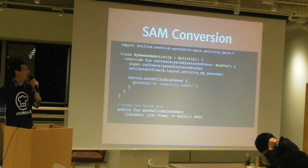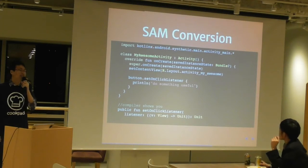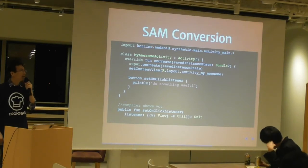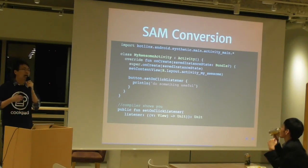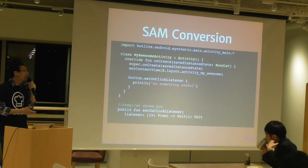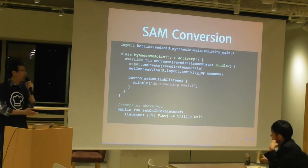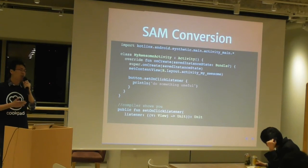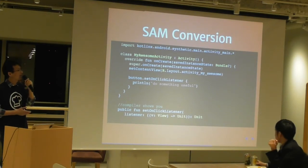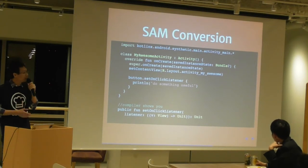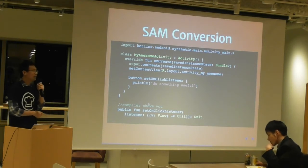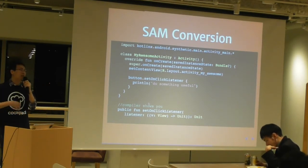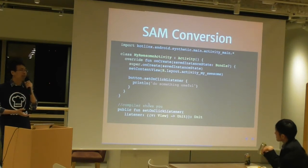Another good thing is SAM conversion. If you remember you have a button with 'setOnClickListener,' and the listener performs a click — you assign code to run when the button is clicked. In Kotlin there is no boilerplate you have to write — it changes all of your Single Abstract Method (SAM) interfaces and converts them to Kotlin lambdas right away. The compiler knows right away to convert your SAM interface into a lambda, so you can use it in Kotlin with ease.